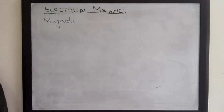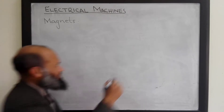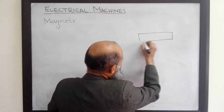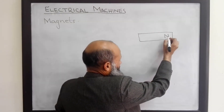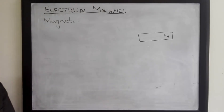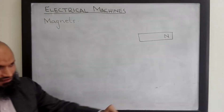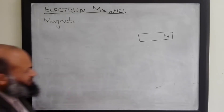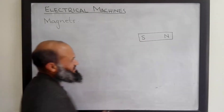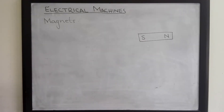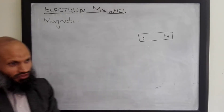Magnets were known to human beings since very early times. There were naturally magnetized materials, and people learned that when these magnets are freely suspended horizontally, the magnet always orients itself in a particular direction. One end orients towards the north pole of the earth — that end is called the north-seeking pole, or simply the north pole of the magnet. The other end orients towards the south pole of the earth and is called the south pole of the magnet.